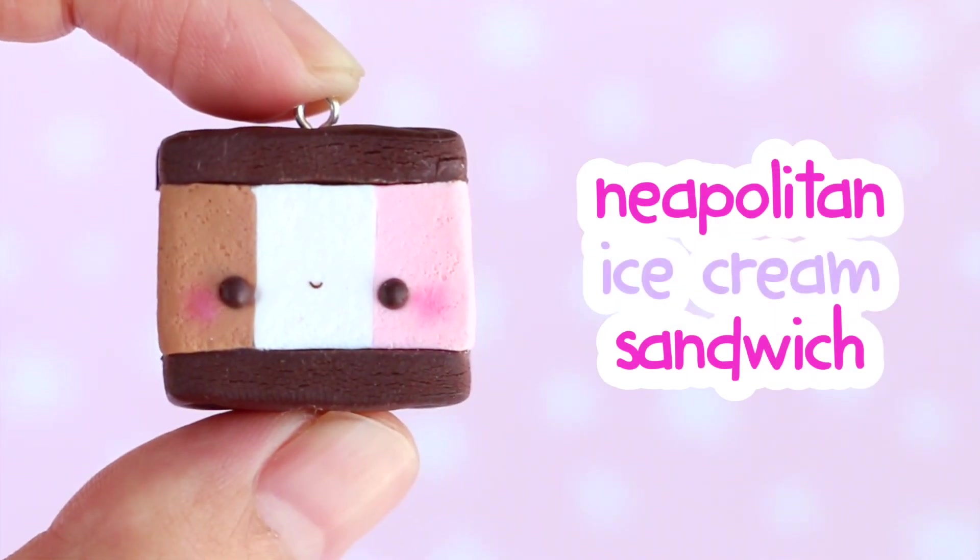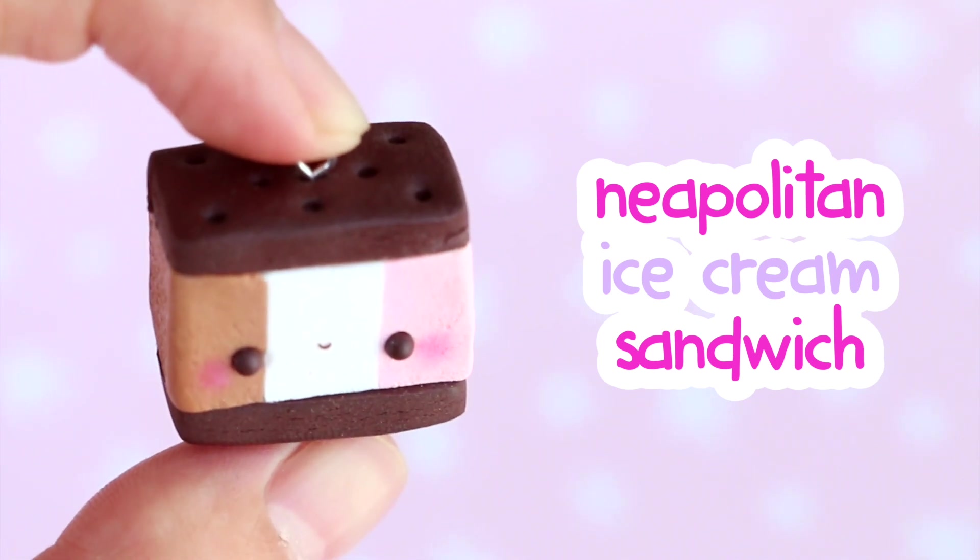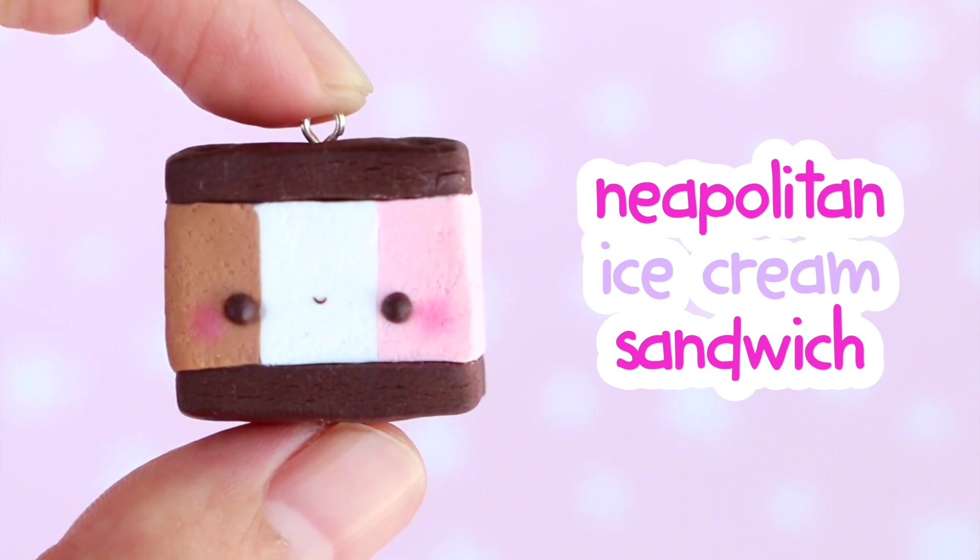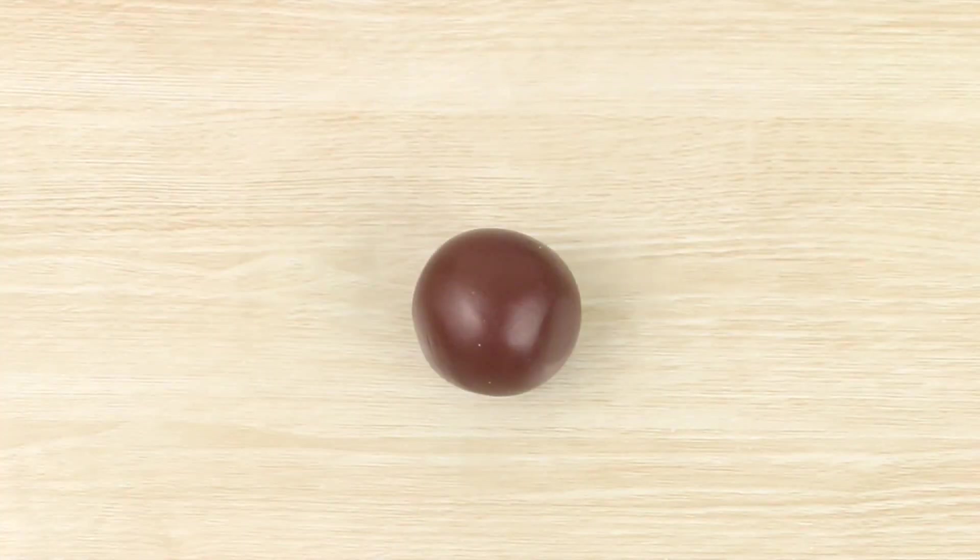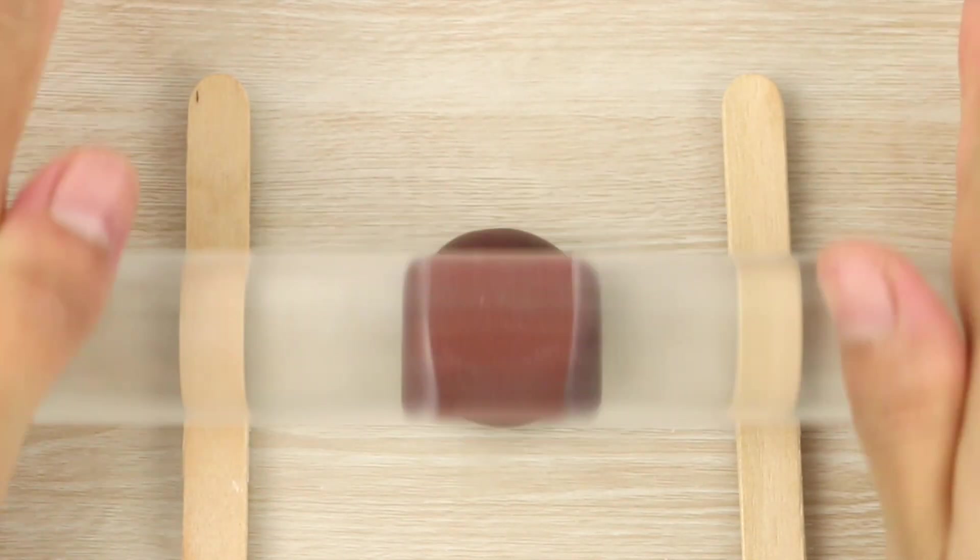The first one that I'm making is a Neapolitan style, with chocolate biscuits or cookies. To start out, I have a large ball of dark brown clay, and I'm going to roll that out between two stacks of two popsicle sticks.